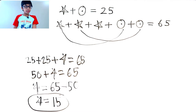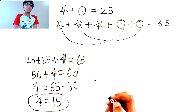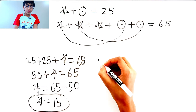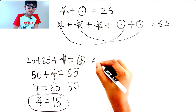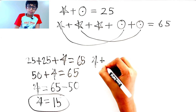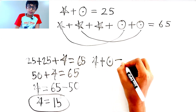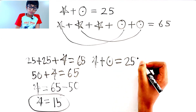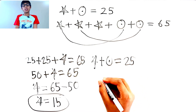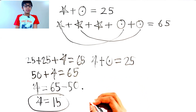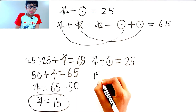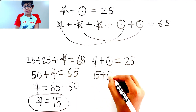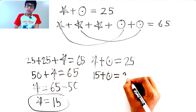Now we know what star equals. Let's find out what circle equals. Let's write this equation here: star plus circle equals 25. We know how much star is, so instead of putting star, let's put 15. So 15 plus circle equals 25.